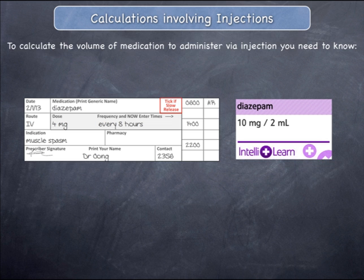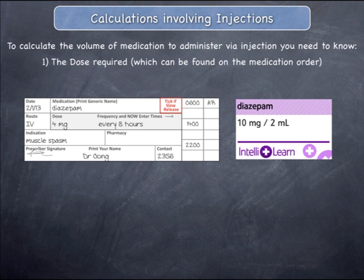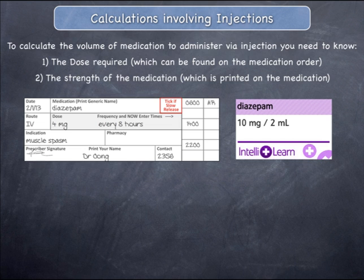To calculate the volume of medication to administer by injection, you need to know the dose that the patient must receive in grams, milligrams, or micrograms. This information is always provided on the medication order in the box labelled dose. You also need to know the strength, which is also known as the concentration, of the medication in question. This information is printed on the medication as two numbers separated by a backslash sign, or sometimes the word 'per'. The first number is the stock strength and the second number is a volume in mils.